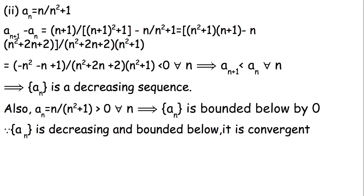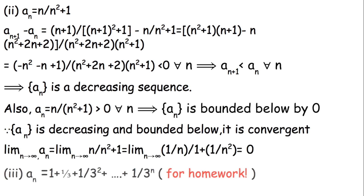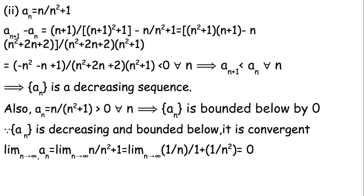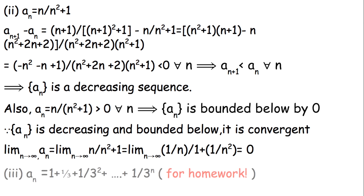To confirm, as N approaches infinity, AN = N/(N²+1). Dividing numerator and denominator by N², we get (1/N) / (1 + 1/N²). As N→∞ this gives 0/(1+0) = 0. So the sequence converges to 0. The third question is your homework — determine its monotonicity and use the theorem to check its boundedness.